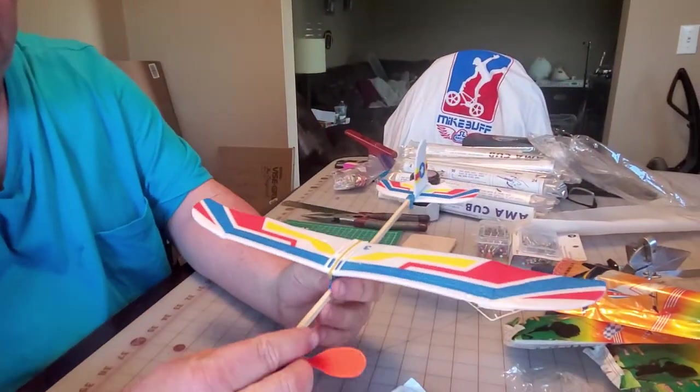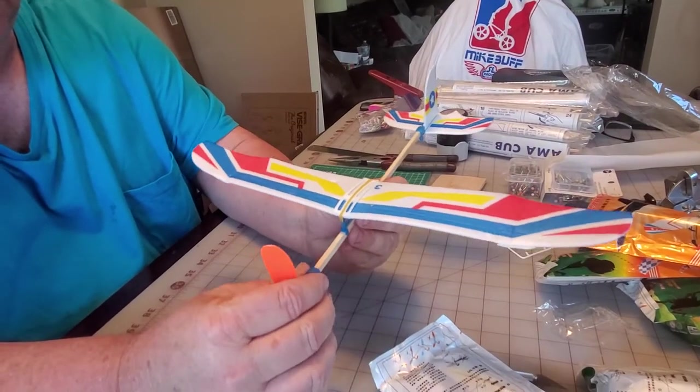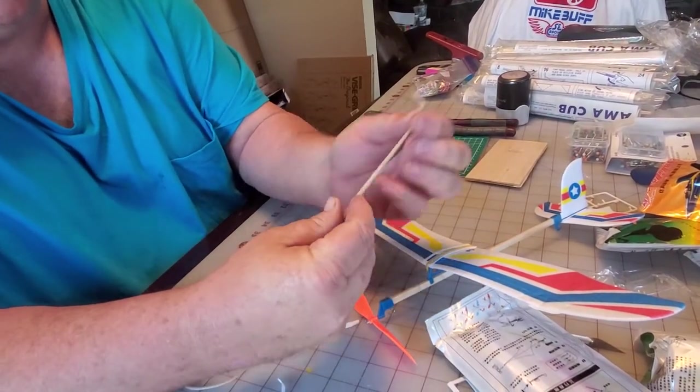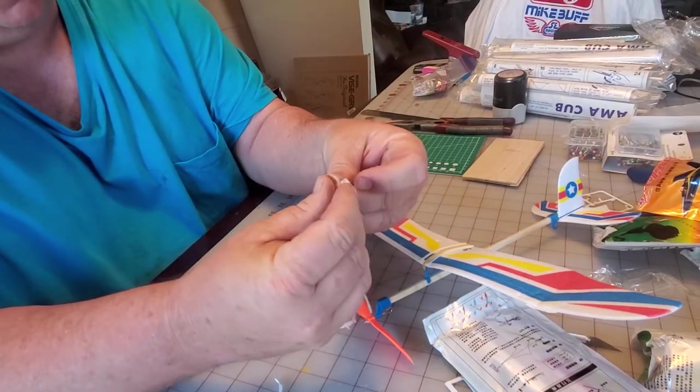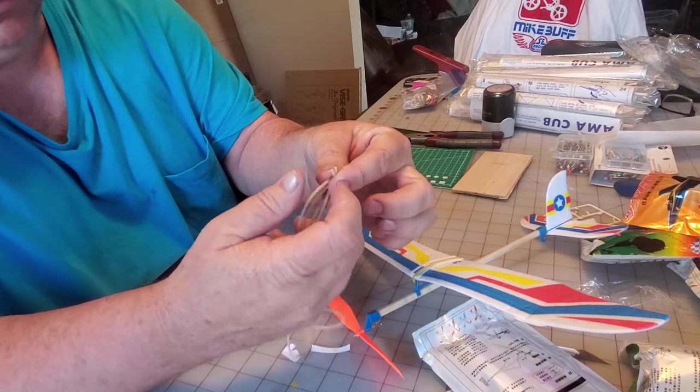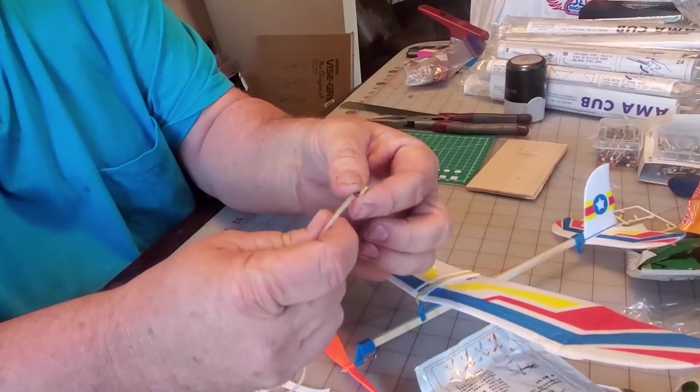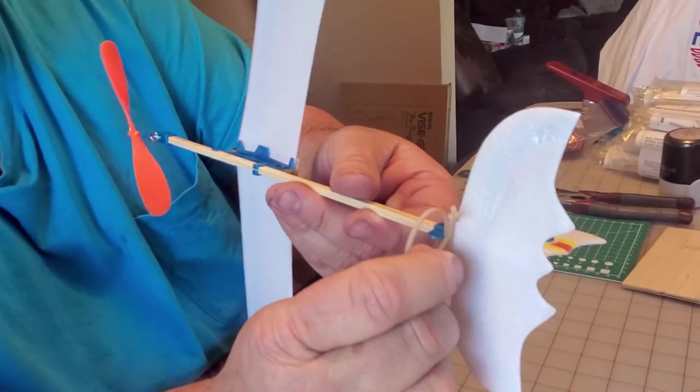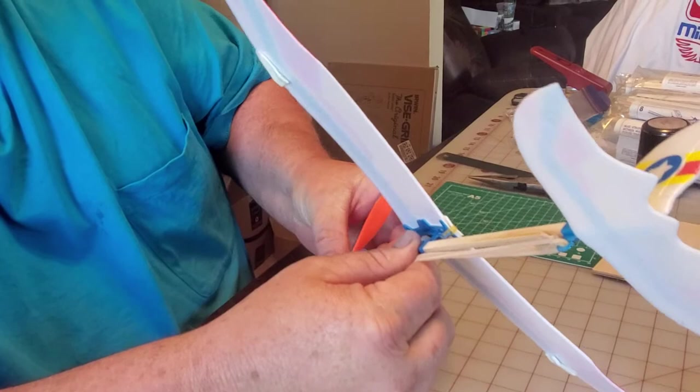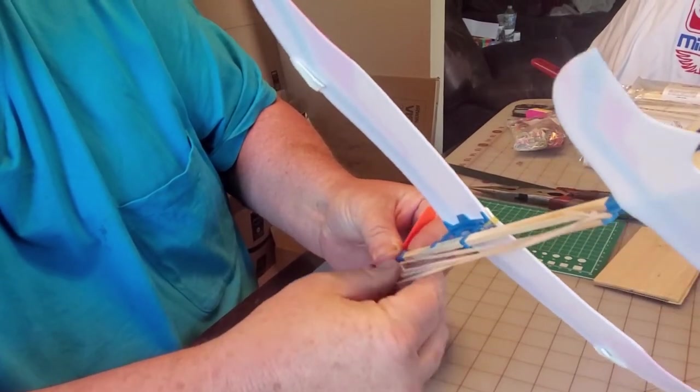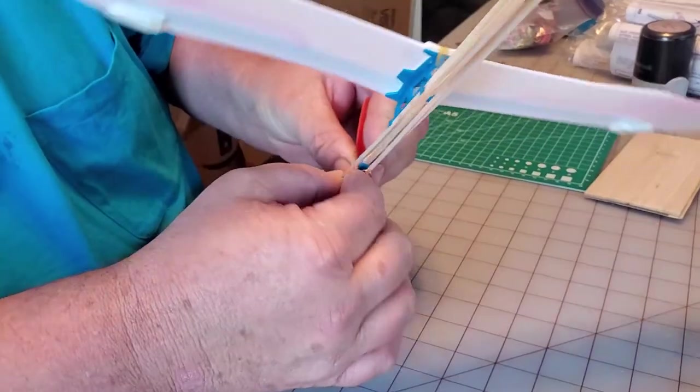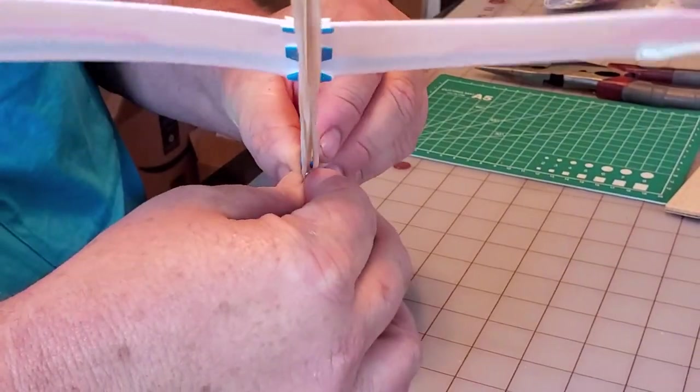Now we're ready to put the propeller right on the front. So now we're going to put the rubber band on. I tied the knot in the end of the rubber band. It's going to be a loop. I'm going to hook this to the back of the plane with the knot right there in the center. Then I'm going to hook both pieces to the front of the plane right here.